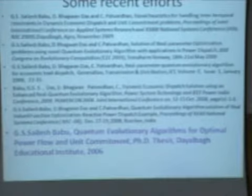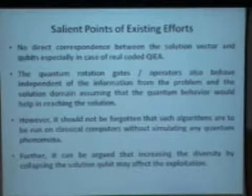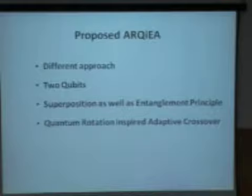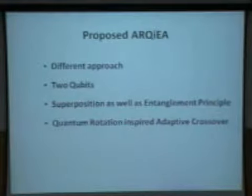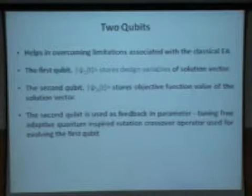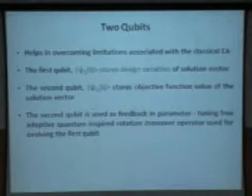The real-parameter QEA compares favorably against a combination of evolutionary programming and sequential quadratic programming, and also against particle swarm optimization combined with SQP. Results are shown on a 110-generator system. One PhD thesis was submitted in 2006 covering many power systems problems including optimal power flow and unit commitment. This has been further extended by including superposition and entanglement in designing a new quantum rotation-inspired adaptive crossover, part of the PhD work of Ashish Mani. The aim is to use the second qubit as feedback in a parameter-tuning-free adaptive quantum-inspired algorithm.